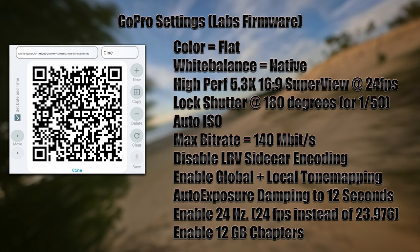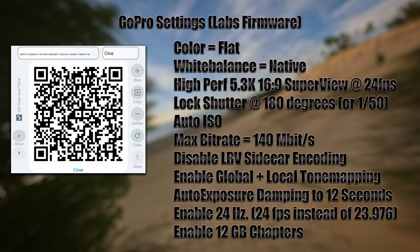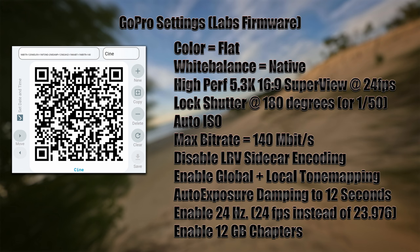The auto exposure damping controls how long it takes the GoPro to adjust ISO when moving from a dark area to a bright one — for example, flying out from shade into full sunlight. We're also enabling True 24, which encodes at exactly 24 frames per second rather than the broadcast standard of 23.976, making it easier if you later do visual effects work.